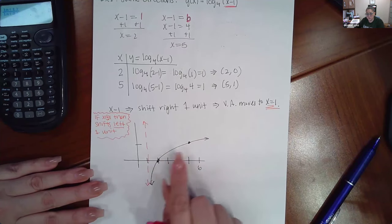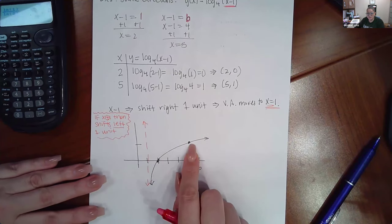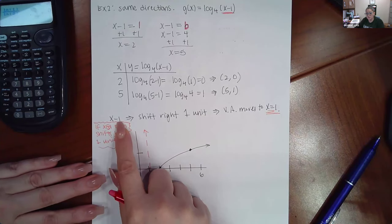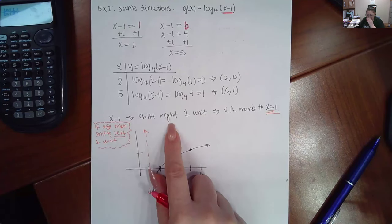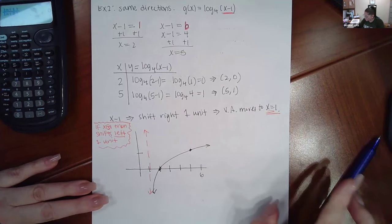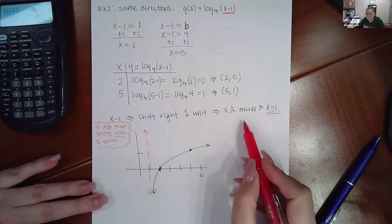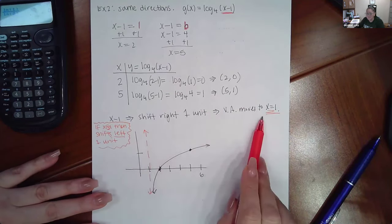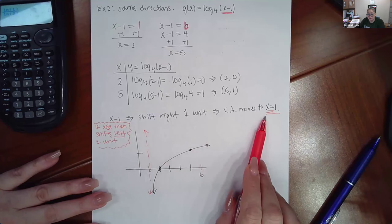So I drew those points here, two zero, five one. Now this time, remember, you have x minus one inside the argument, which does shift the graph to the right one, which means the vertical asymptote is going to move to the right one. And when it does do that, it's now going to be at x equals positive one.